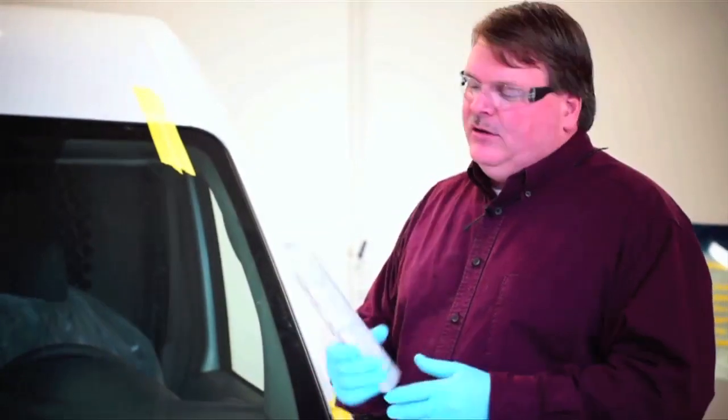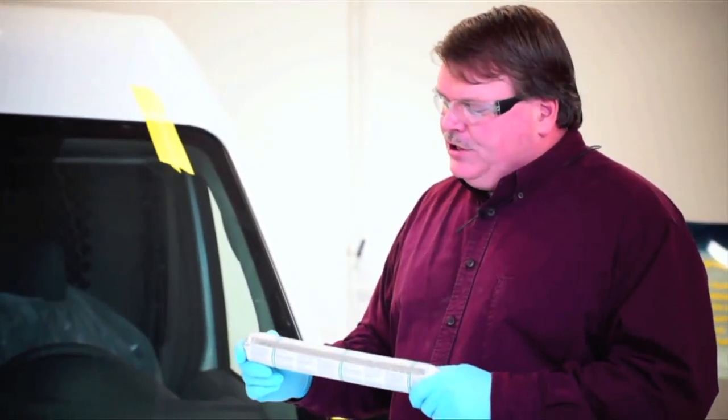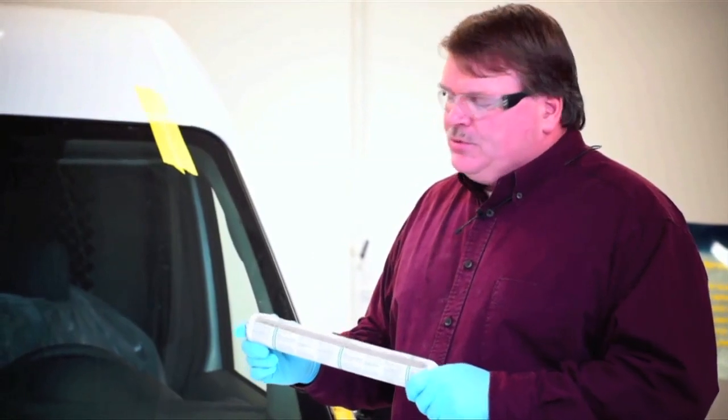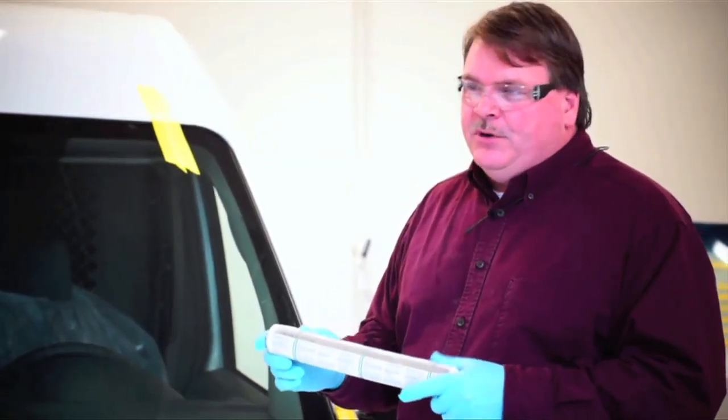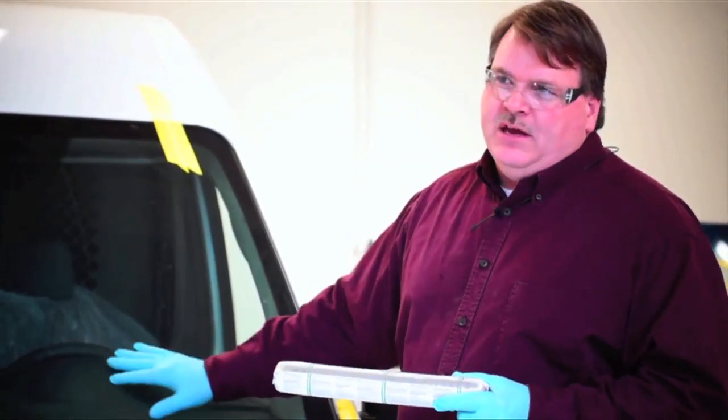The other item that you want to take a look at is also getting the lot number of the urethane that you're using. Tracking the lot numbers will also help you in case you find out that you had a bad batch of urethane produced. Then you go back and locate the vehicles you use that urethane on and remove that windshield before it becomes a big liability for everybody involved.